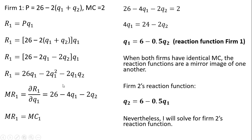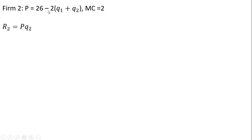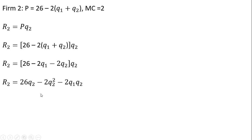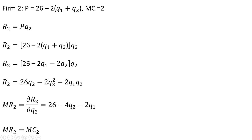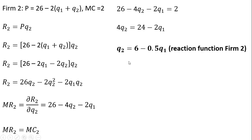Nevertheless, I will formally solve for firm 2's reaction function. From the perspective of firm 2, it faces the same inverse market demand and has marginal cost equal to 2. We get firm 2's total revenue — price times quantity — plug in the inverse market demand, simplify, then take the partial derivative of the revenue function with respect to Q₂ to get marginal revenue. Setting MR equal to MC and solving for Q₂ gives us firm 2's reaction function, which is indeed the mirror image of firm 1's.